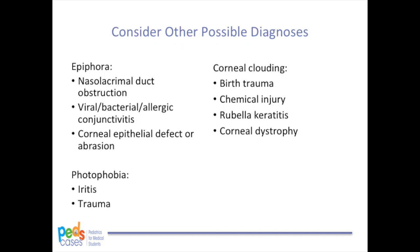It is important to consider other diagnoses in your differential when a child presents with signs and symptoms of congenital glaucoma, since it is a relatively rare entity. For epiphora, nasolacrimal duct obstruction is an important differential — children may present with excessive tearing since blockage prevents tear drainage. This is usually accompanied by yellow or green discharge and usually resolves by one year of age. Viral, bacterial, and allergic conjunctivitis may also cause epiphora with a history of recent illness or allergies. A corneal epithelial defect or abrasion observed with fluorescein staining on slit lamp should also be considered.